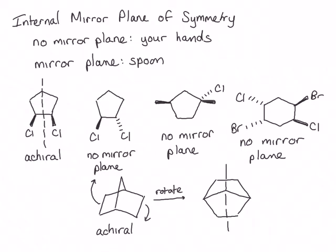Hopefully these examples help you understand how to look for that internal mirror plane of symmetry. You should practice more examples on your own until you're comfortable determining whether a molecule has an internal mirror plane of symmetry. This is useful because if a molecule contains a mirror plane of symmetry, it must be achiral. Now that we've learned to determine whether a molecule is achiral, what makes a molecule chiral?